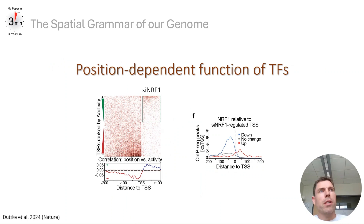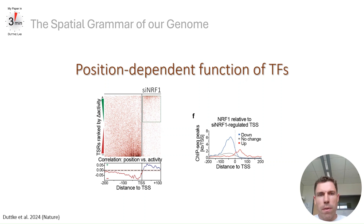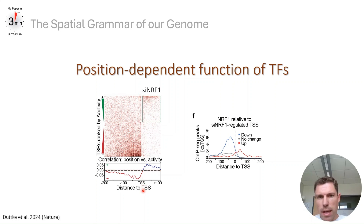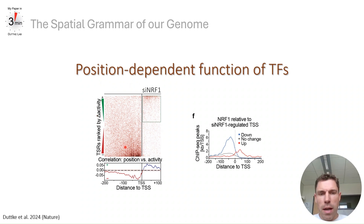This begs the question: are all transcription factor binding sites created equal? To address this, we knocked down transcription factors — as shown for NF1 here — and captured changes in nascent TSS using csRNA-seq. Sorted by the TSS, you can see that promoters and enhancers with an NF1 motif downstream were actually activated upon knockdown of these canonical activators, while those with an NF1 site upstream were repressed.